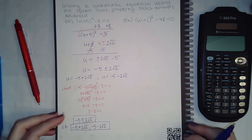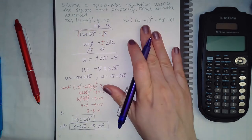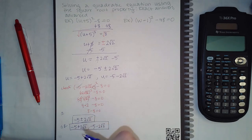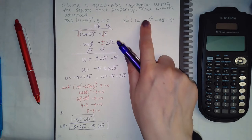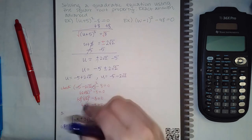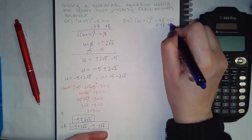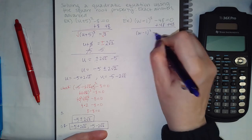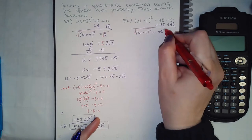We're going to continue with Module 21, following the same procedure as the previous example. In order to take the square root on both sides, I need to isolate the term that has the square. So I'm going to add 48 to both sides, and then I can apply the square root on both sides, making this plus or minus.